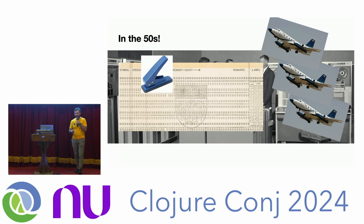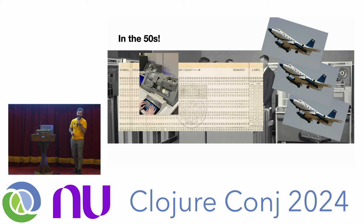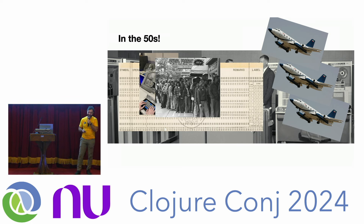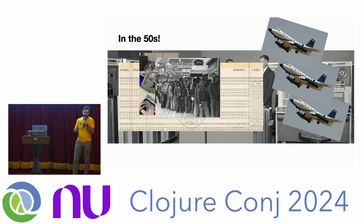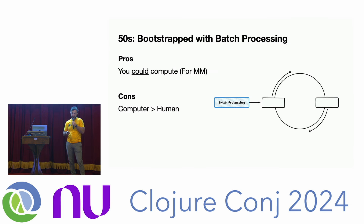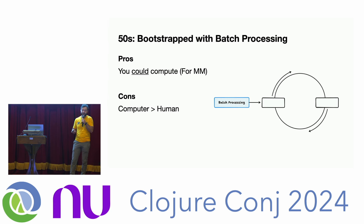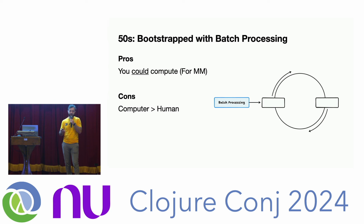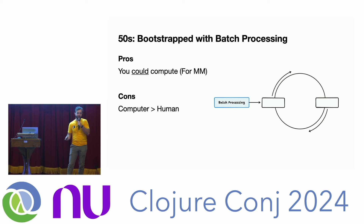You would write out punch cards in a room, give them to an operator, and then a few days later you'd know whether your code actually worked. People would wait in these long lines just to get access to the computer. This was the 1950s — batch processing. The fact that you could get compute at all was amazing. But the core assumption was that human time was worth less than computer time.